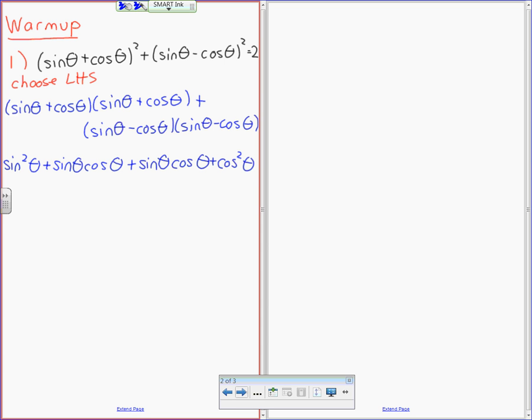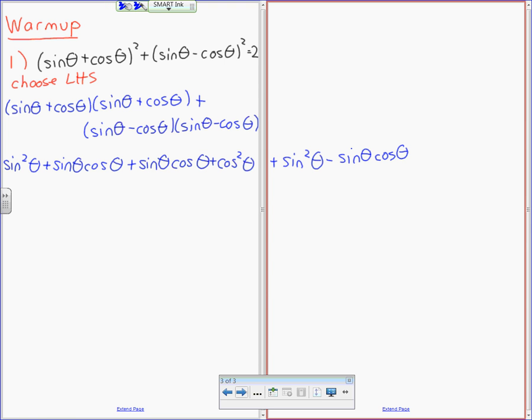Jennifer, can you do the same thing with the second bracket? Sine times sine is sine squared theta, good. Sine times negative cos is negative sine cos theta. Negative cosine times sine is negative cosine sine. And negative cosine times negative cosine is positive cos squared theta, because negative and negative is positive.